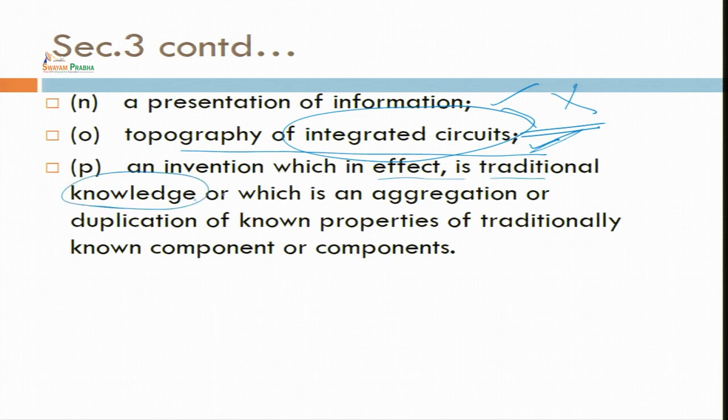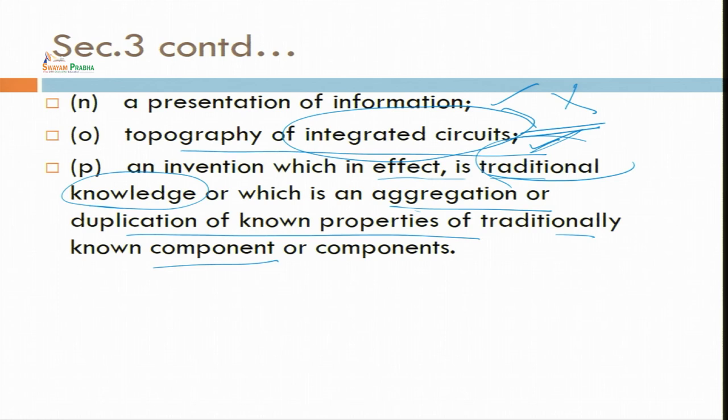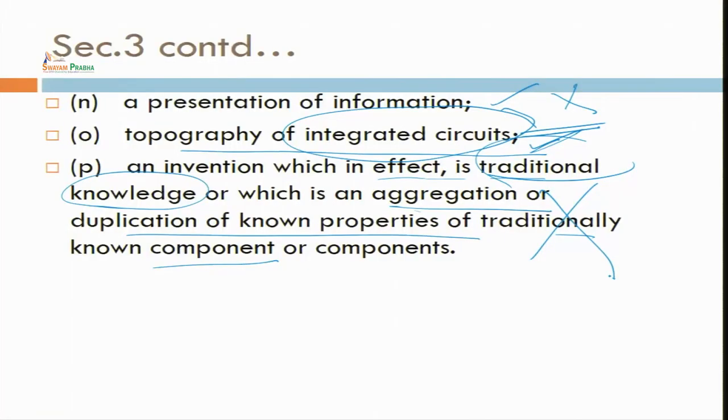Inventions which affect traditional knowledge — which is already in public domain — are not covered under this patent. This is aggregation or duplication of known properties of traditional known components. For example, US scientists took patents on Neem and Haldi, which were traditional knowledge of India. How can one person get a patent on traditional knowledge which is already in the public domain? Now the Government of India has made a Traditional Knowledge Digital Library, through which we can do a patent search. We can check this digital library, which includes things already existing in India's traditional knowledge — Vedas, Puranas, Ayurveda books of Charak — all this traditional knowledge is exempted under the Patent Act.